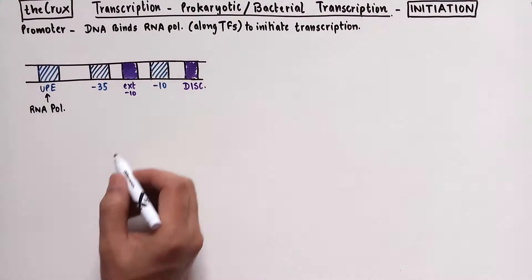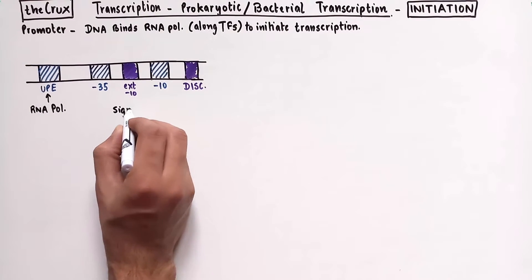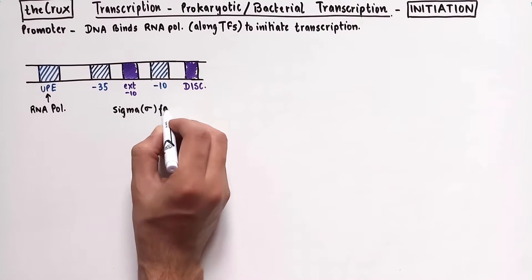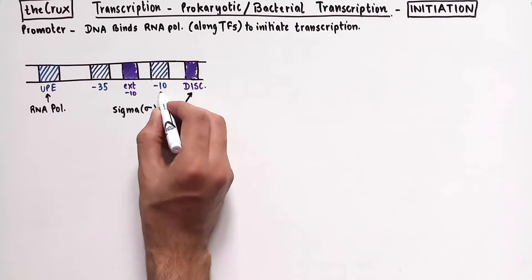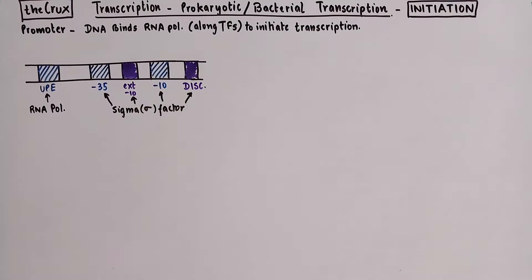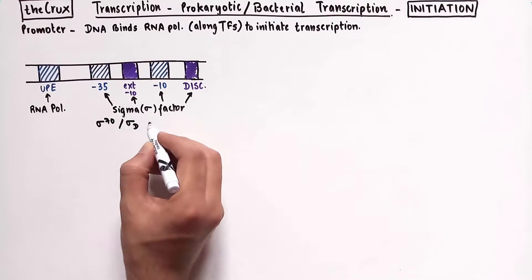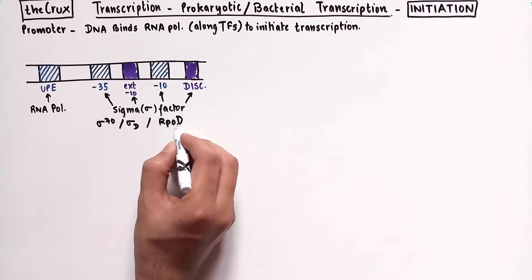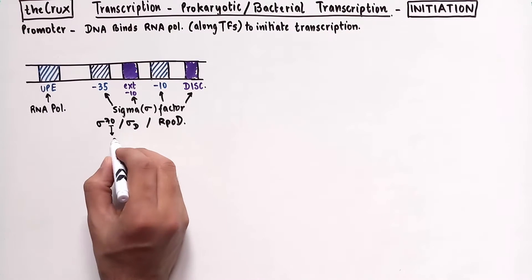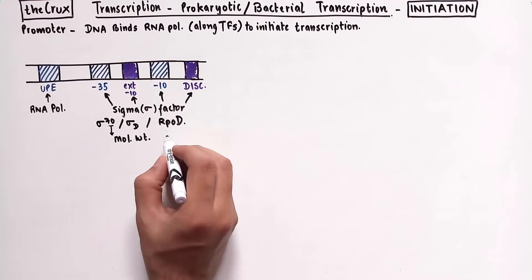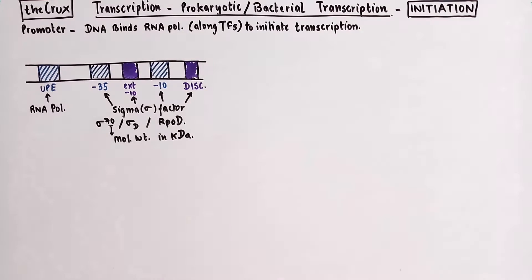And we also said that the RNA polymerase binds to UPE whereas sigma factors bind to the remaining elements. Since there are different types of sigma factors, in this video we will restrict our discussion to sigma-70, also known as sigma-D or RPO-D. The 70 here refers to the molecular weight of this particular sigma factor in kilodaltons.